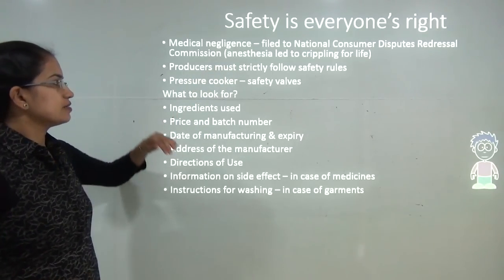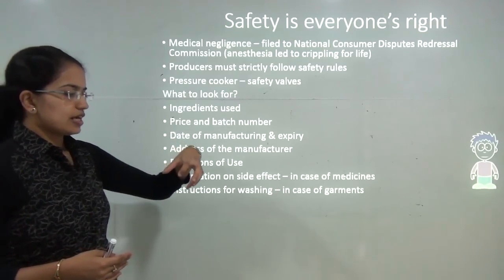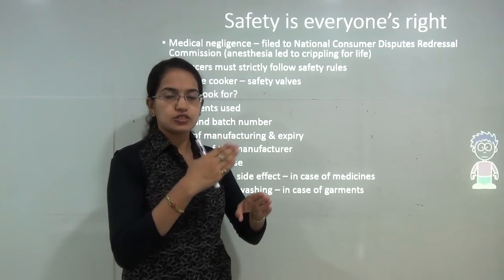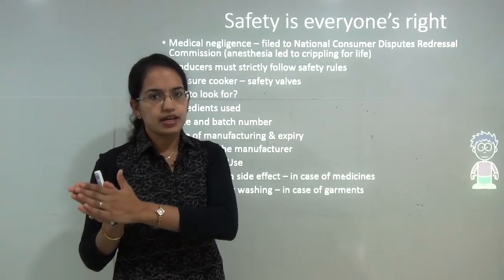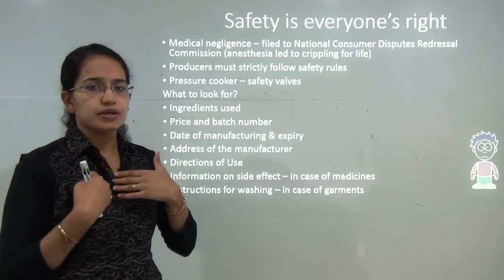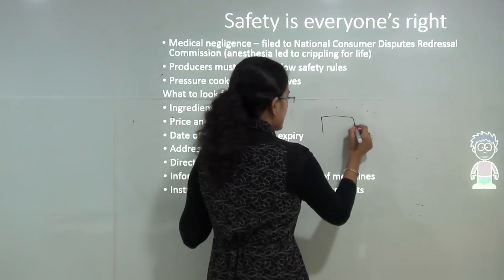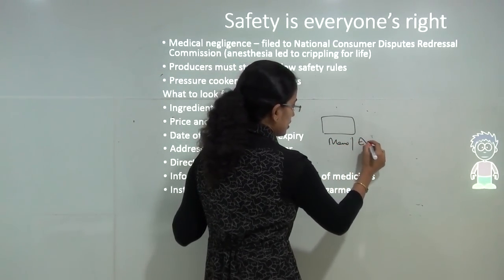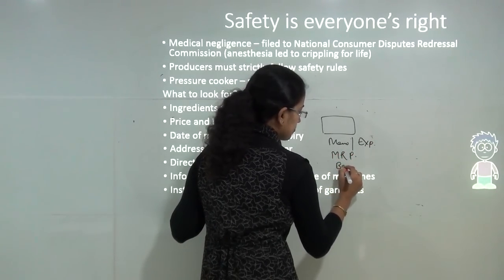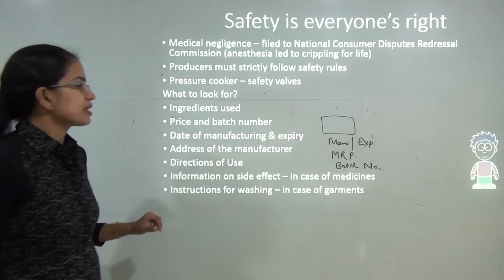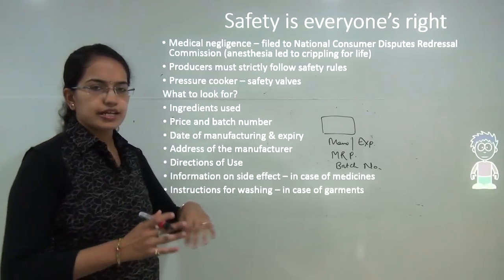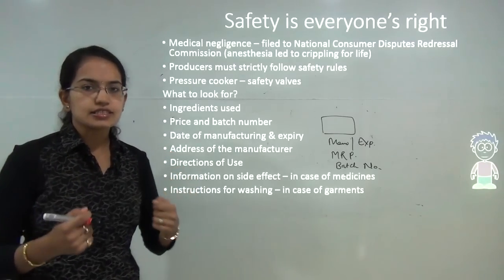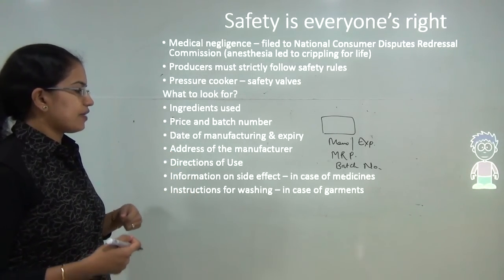For example, a pressure cooker must have safety valves; if it does not meet the given guidelines, it should not be allowed in the open market. As a customer, when buying a medicine or tablet, you should look for the date of manufacturing, date of expiry, MRP, batch number, ingredients or composition, directions of use, and the address of the manufacturer. These are things customers have the right to look for.